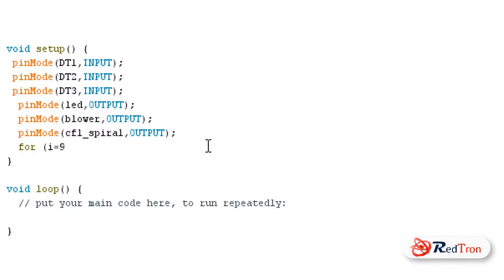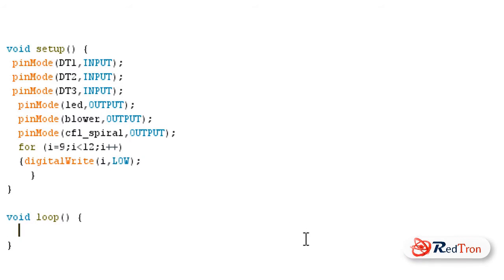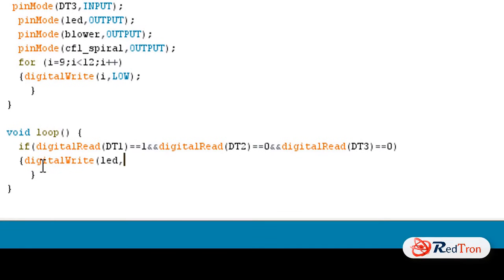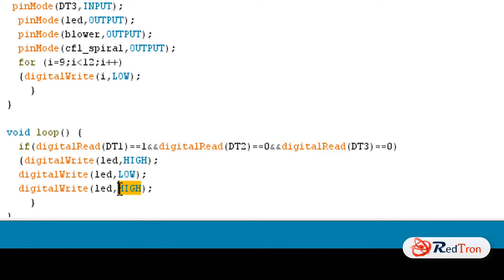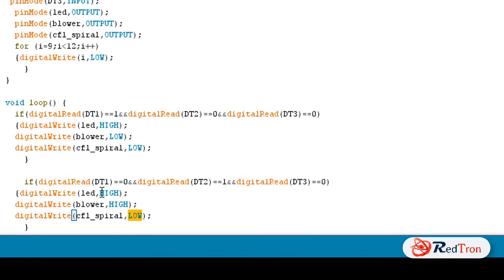Correspondingly, the output pins are 9, 10, and 11 — pin 9 for LED, pin 10 for blower, and pin 11 for CFL spiral. Now I will write the conditions. The logical condition is: if someone presses 1 from their mobile, the DTMF receives it and decodes it into binary 100, then I turn on only 1 device at a time and keep the rest off. I copy-paste and replace LED with blower and CFL spiral. Only the condition changes; the rest of the code stays the same.